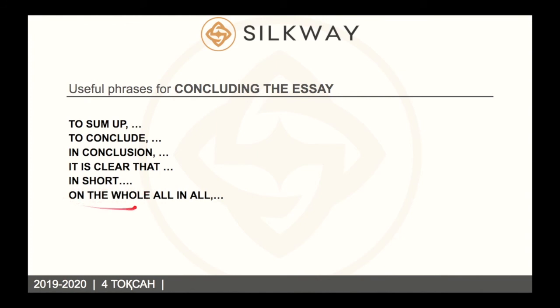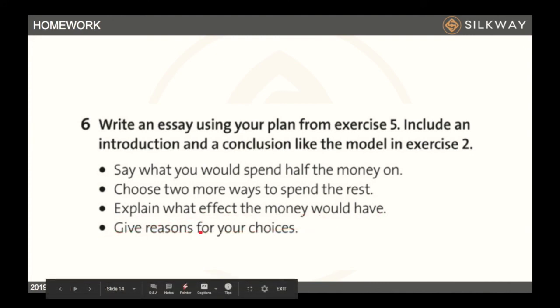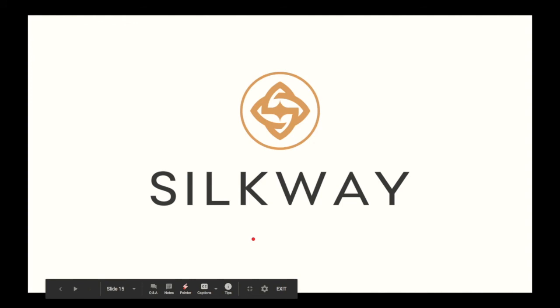For homework, write an essay using your plan from exercise 5 — go to your book and find exercise 5. Include an introduction and a conclusion like in the model exercise, and read that model essay to use it as a guide. You need to say what you would spend half the money on — 50% — then choose two more ways to spend the rest, explain what effect the money would have, and give reasons for your choices. I believe in you, and see you in the video chat!